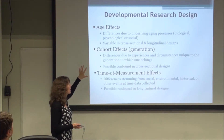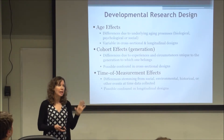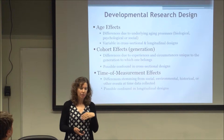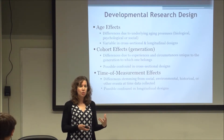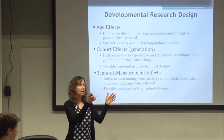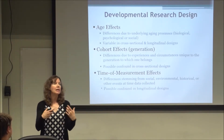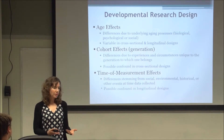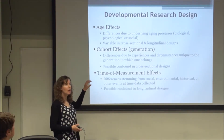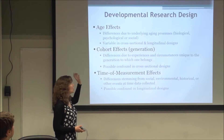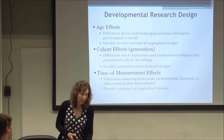We want to know: are the differences due to some underlying aging process? It could be biological changes, psychological changes, or social changes. The key question is whether the process of aging itself is affecting our outcomes. There are two ways we can typically look at age-related questions: cross-sectional designs and longitudinal designs, and each has its own confounds.